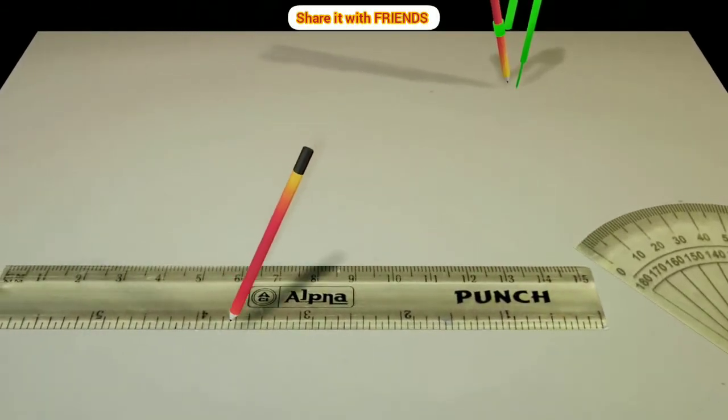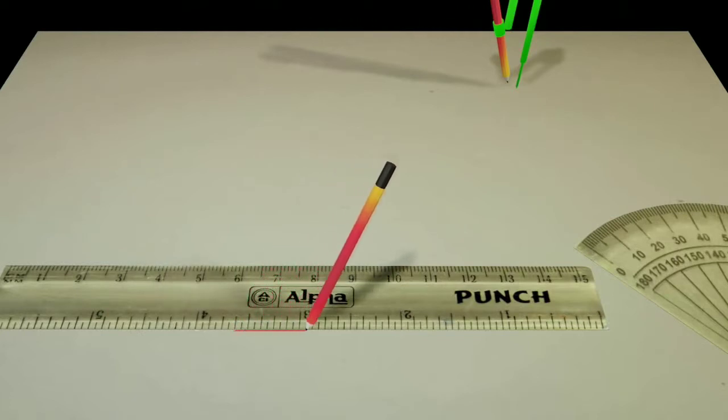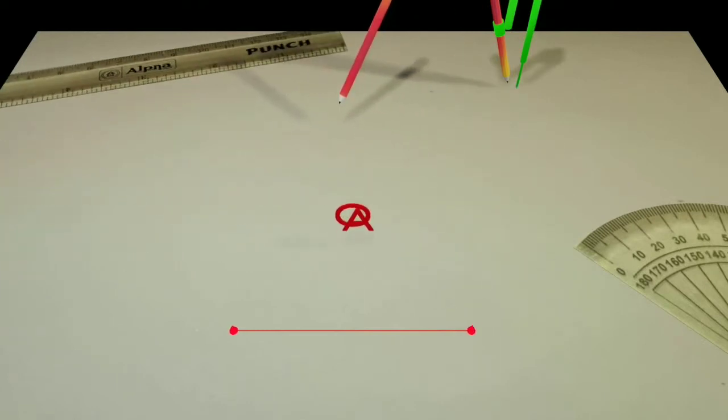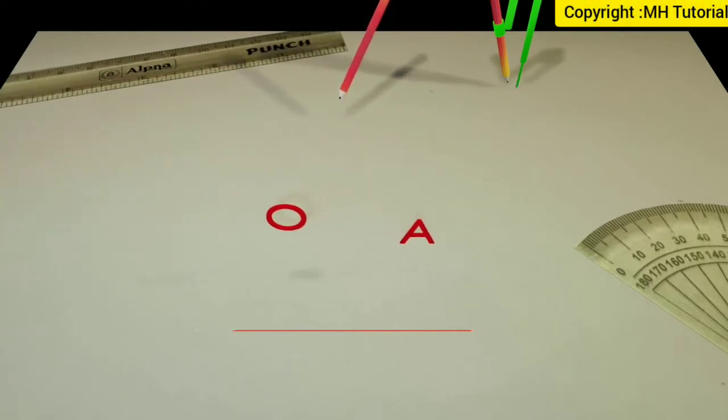First with a scale and a pencil, a line segment is drawn on the middle of the page. The two endpoints are named O and A.